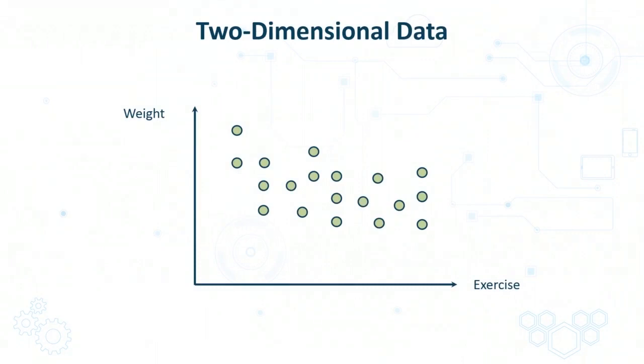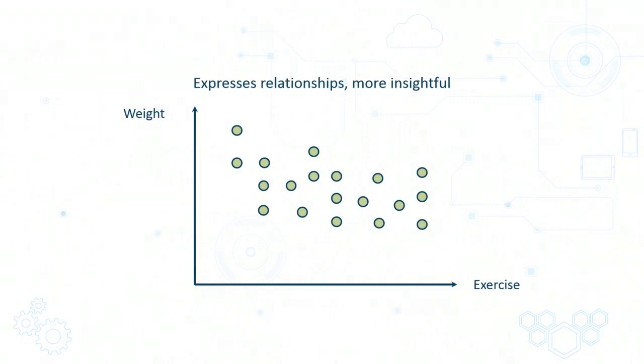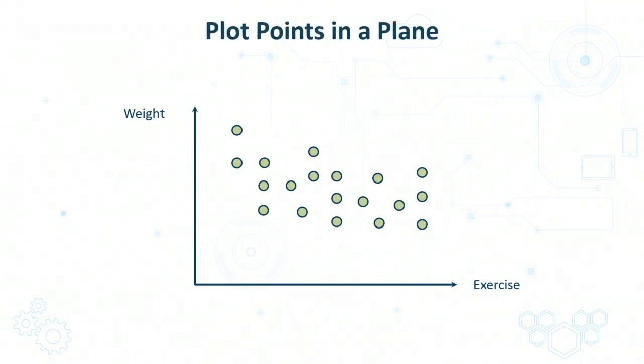To understand exactly how this can work, let us consider an example where we have a single feature, which is the amount of exercise performed by some individuals, and a single output value which needs to be predicted, which is the weight of the individuals. In order to understand the relationship between exercise and weight, it is useful to plot the data in a two-dimensional plane, just as we have over here, and a quick glance confirms that there does seem to be some kind of relationship between the two.